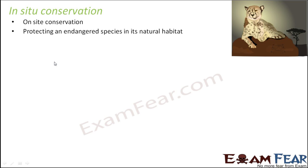In situ conservation means protecting an endangered species in its natural habitat. Endangered species are those whose numbers have already reduced a lot — the count is very low and they are very near to extinction. You may have just a handful of organisms belonging to that species. If those organisms also get killed, the species will become extinct. But if we maintain at least those organisms, they can reproduce and increase their population once again. These endangered species are specially protected in their natural habitat.